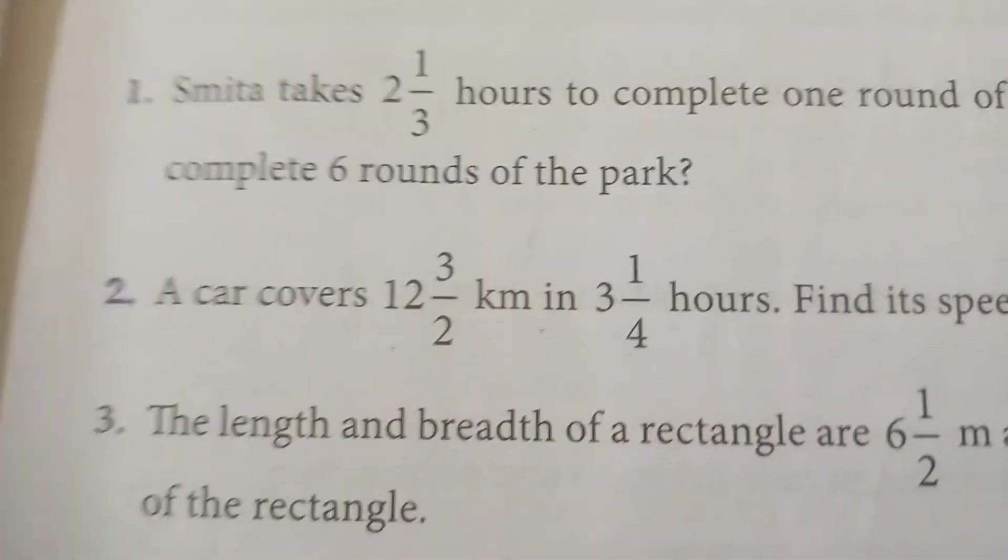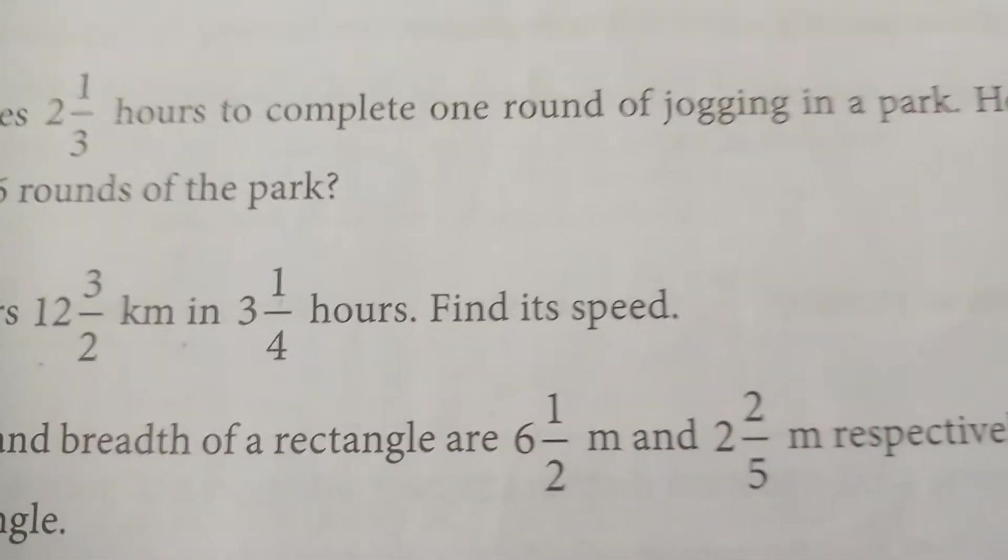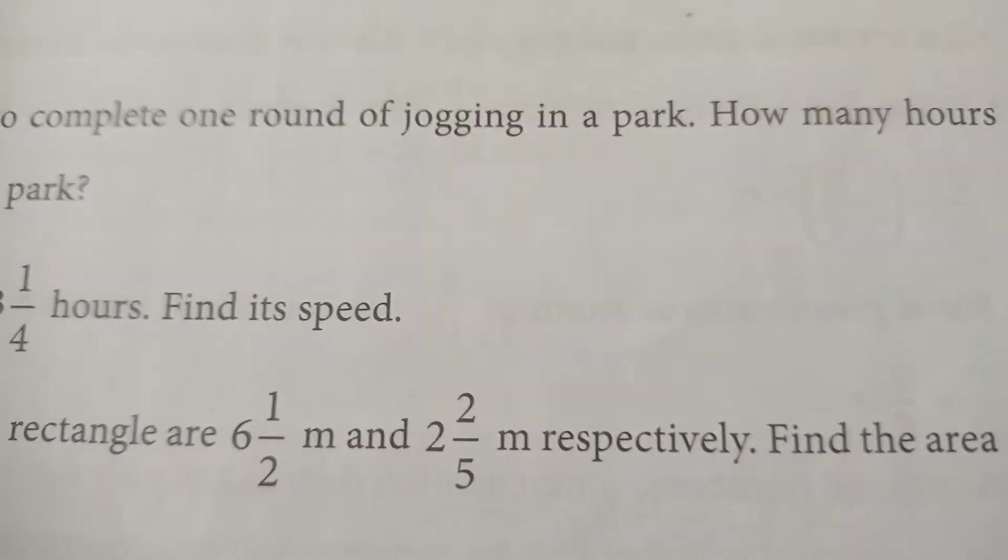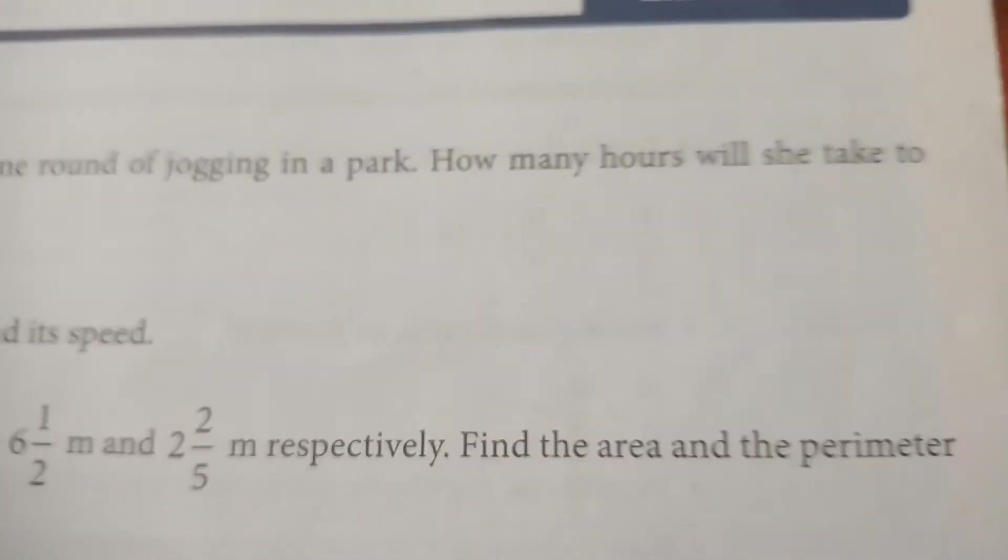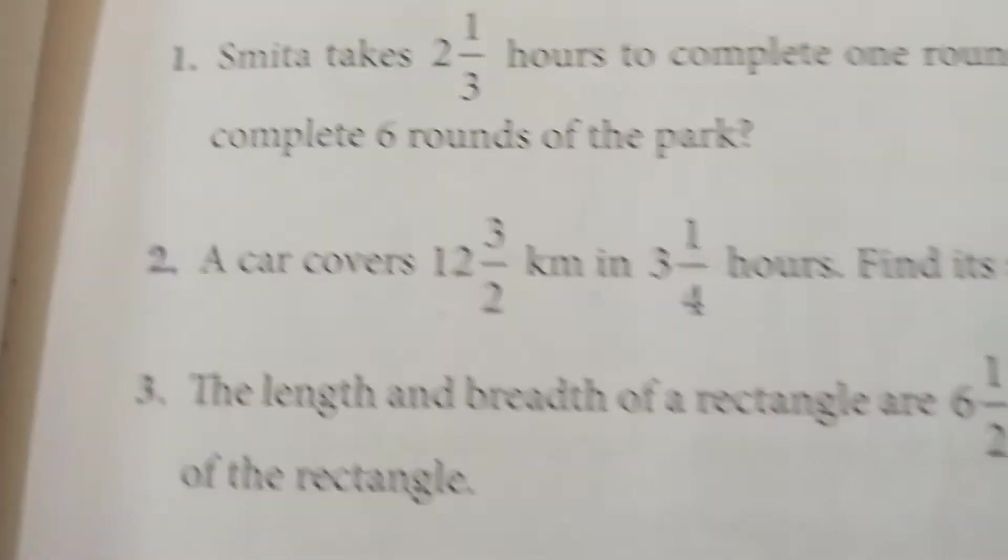54 over 13 aayega 4 whole 2 over 13. Par yeh hamari speed hai. Ab hum karte hain next question. Third question: The length and breadth of a rectangle are 6 whole 1 over 2 meter and 2 whole 2 over 5 meter respectively. Find the area and the perimeter of the rectangle.